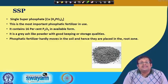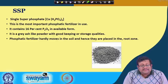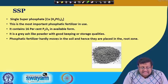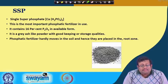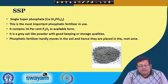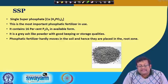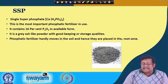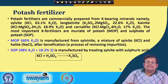Single super phosphate (SSP) has the formula Ca(H2PO4)2. It is the most important phosphatic fertilizer in use in India, containing 16% P2O5 in available form. It is a grey, ash-like powder with good keeping and storage ability. Phosphatic fertilizers hardly move in the soil and hence are placed in the root zone.